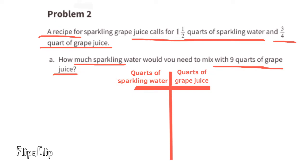The mix: one and a half equals the decimal 1.5, so in the quarts of sparkling water column I can put 1.5. And three-fourths equals the decimal 0.75, so in the quarts of grape juice column I can put 75 hundredths.